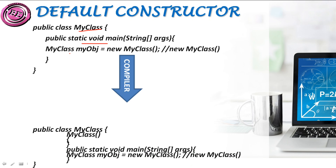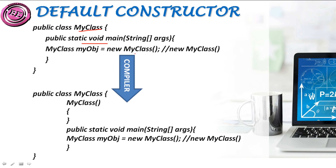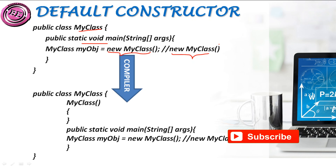So how will the computer convert this particular program? It uses the default constructor. The compiler will convert this particular program accordingly. You may observe that the computer calls the default constructor and creates a constructor using MyClass(). In that MyClass we don't have any data, so it will run and give output to the user. For initializing an object we have two forms: 'MyClass objectName = new MyClass()' or simply 'new MyClass()'. The 'new MyClass()' represents that a constructor is created and is used to initialize that particular object.